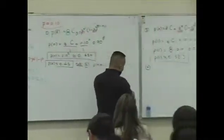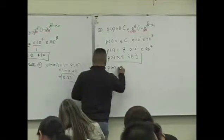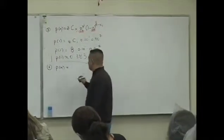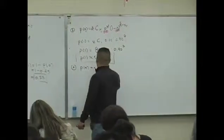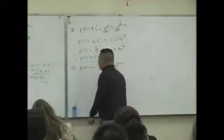P of 2, write down your formula. Every time I use a binomial, I write it down. nCx, p to the x, 1 minus p to the n minus x. Okay, what's n?